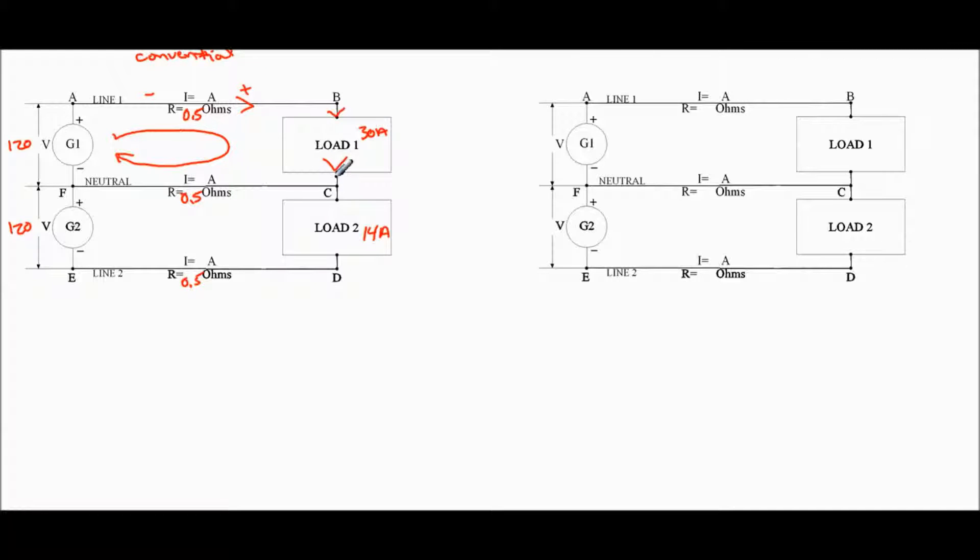And we have 30 amps going into this node. So now on this one, same thing on this closed loop, we have 14 amps going into this load. And 14 amps over here going this way. This one was 30 amps up here going this way. So we're following it through.